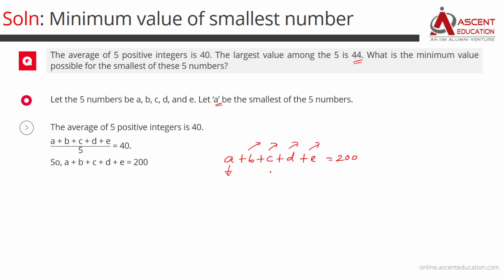Because the largest value amongst these 5 is 44, if we maximize the other 4 values, we assign each of them the value 44. So make B equal to 44, make C also 44, make D also 44, and make E also 44.